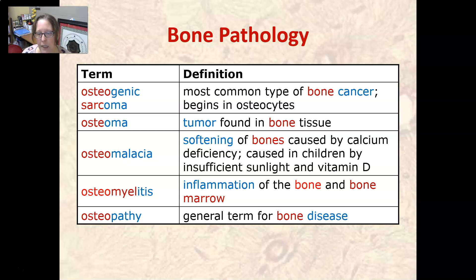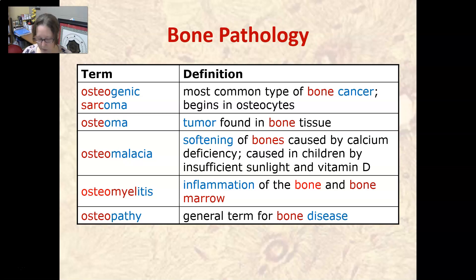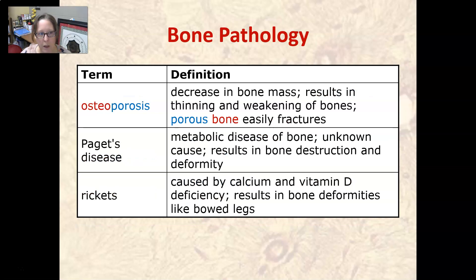Osteomyelitis is an inflammation of the bone and the bone marrow. Osteo is bone, and myelo is bone marrow. Osteopathy is a general term for bone disease. Osteoporosis is a decrease in bone mass. It results in the thinning and weakening of bones, and the porous bone can easily fracture.